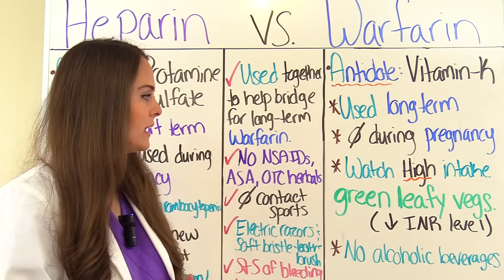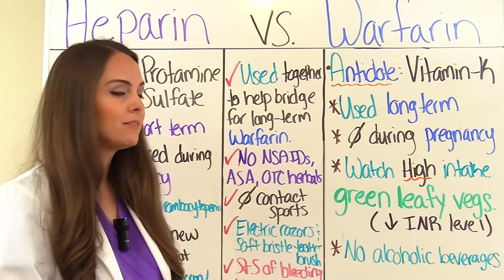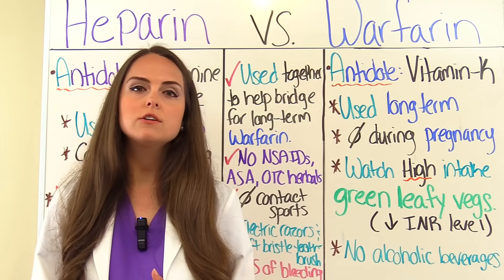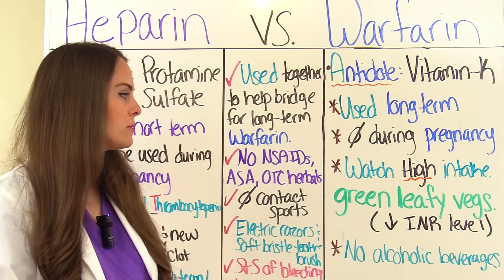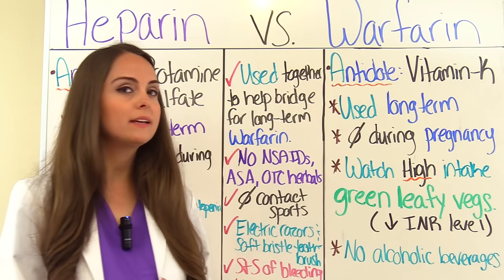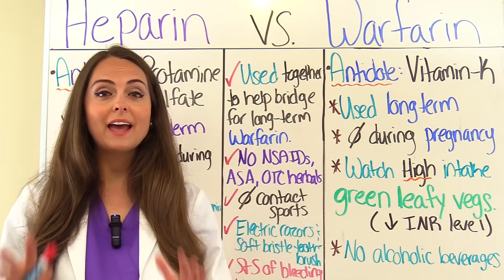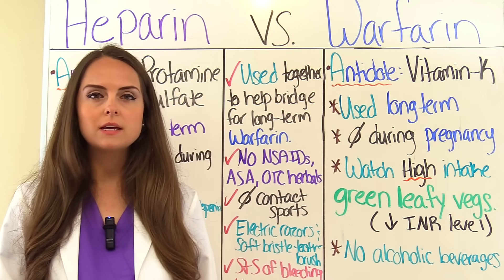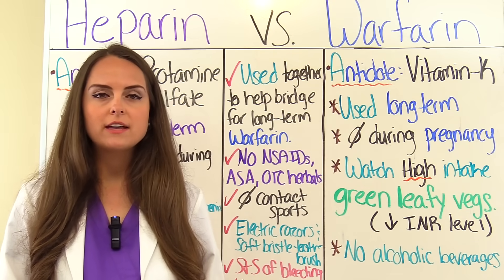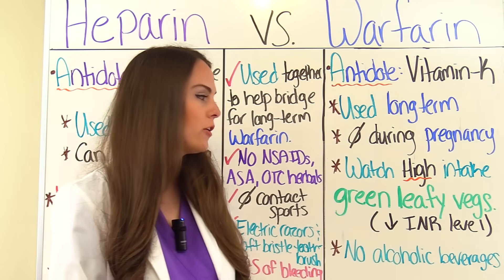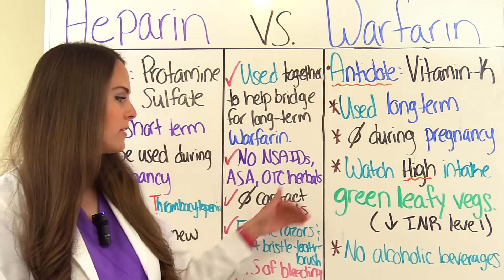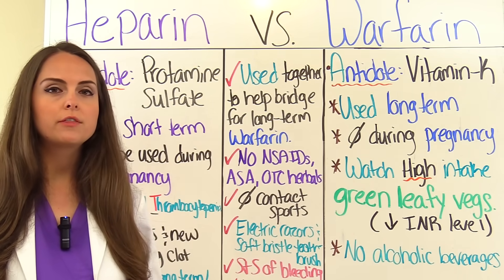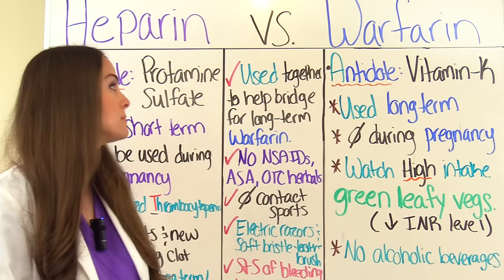With warfarin, remember some important things about diet. Tell the patient to maintain a normal diet but avoid excessive intake of green leafy vegetables — broccoli, spinach, kale — because these foods are high in vitamin K and consuming a lot can decrease the INR level, making them not therapeutic. Also, alcoholic beverages interfere with warfarin, so patients should avoid drinking those.